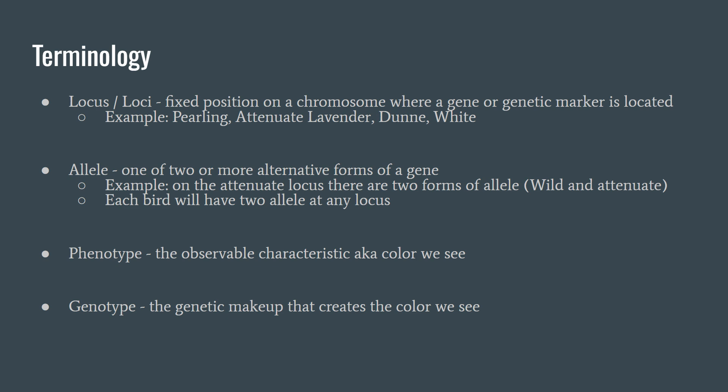The next term we will discuss is allele. Alleles are one of two or more alternate forms of a gene. These are found at the locus and there are going to be two alleles per locus. An example of an allele on the attenuate locus is there are two forms: the wild dominant allele and the attenuate recessive allele. To clarify, each bird can only have two alleles at any given locus.